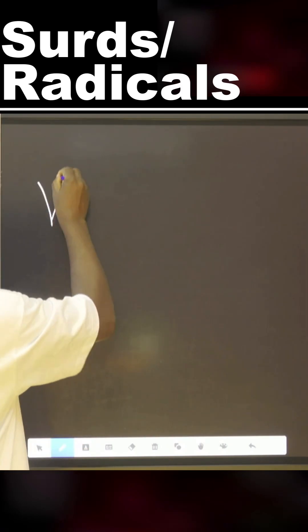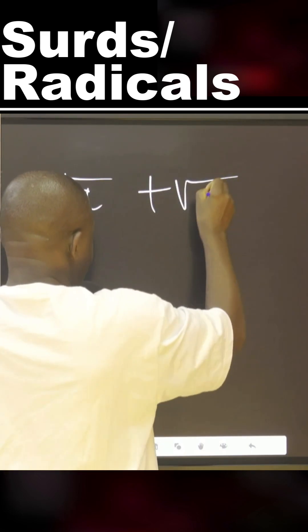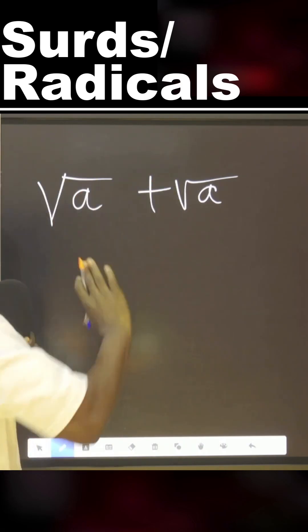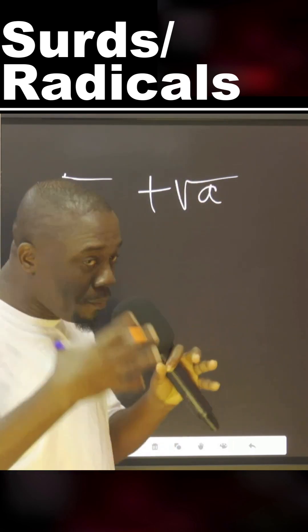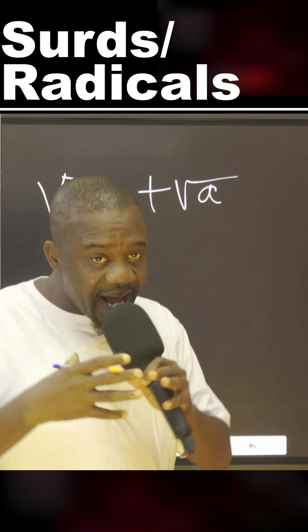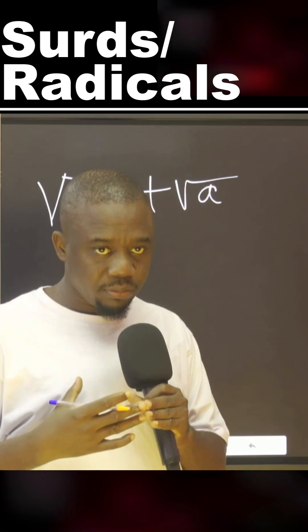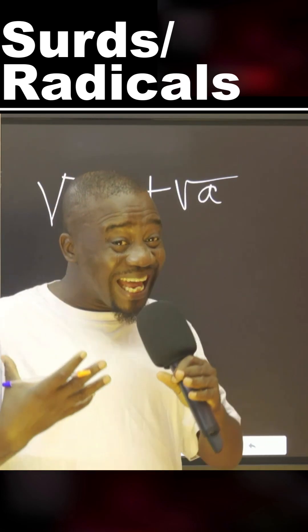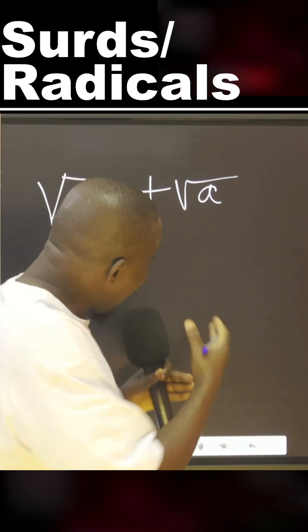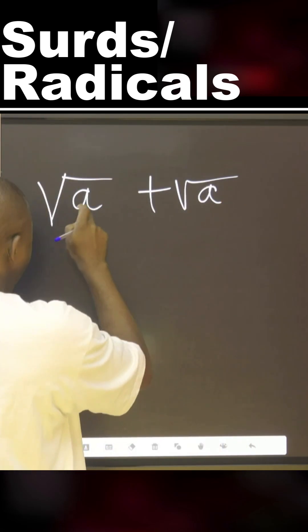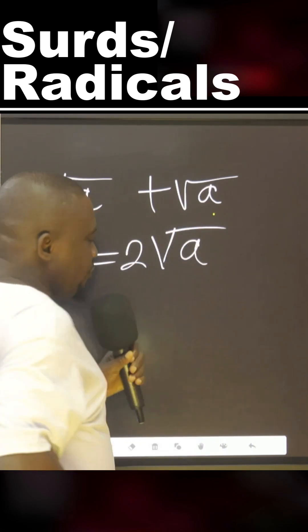If you do the square root of A plus the square root of A, you can see they are the same. It's like you are looking at two apples because this and this resemble, they're like friends, brothers, same race, same tribe, same understanding, same sex. You can add them together by saying one, two equal to two square root of A.